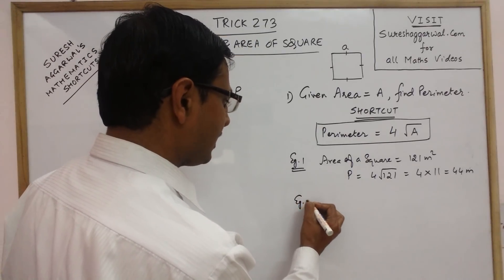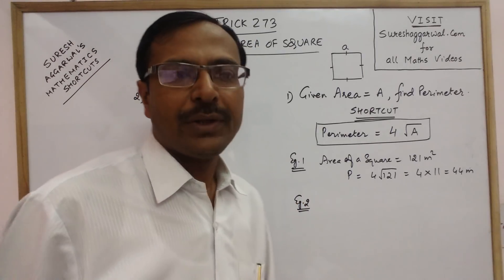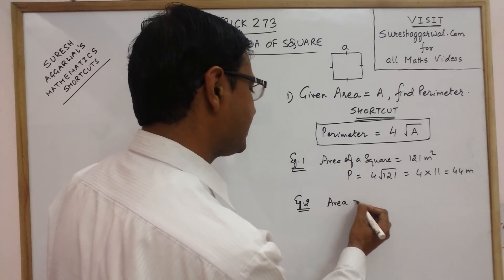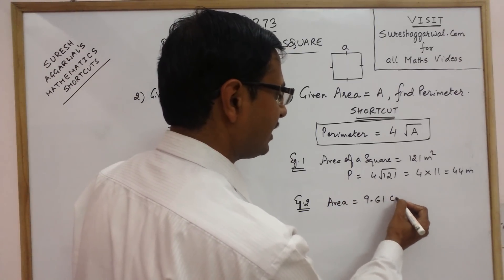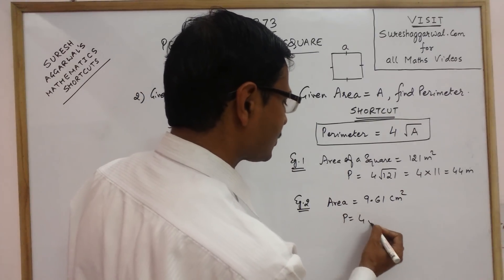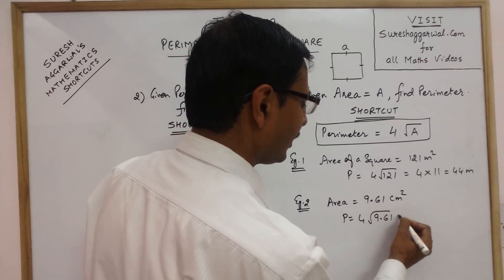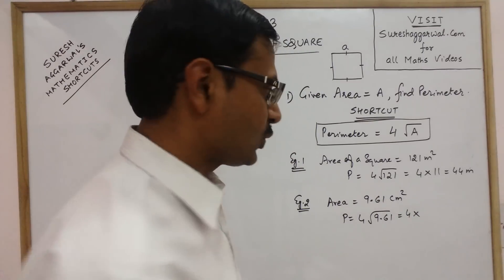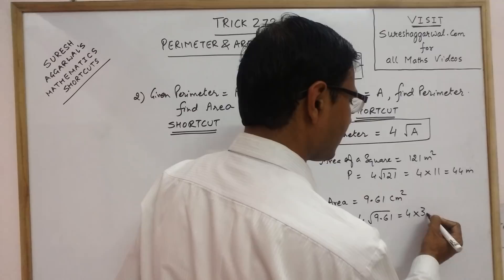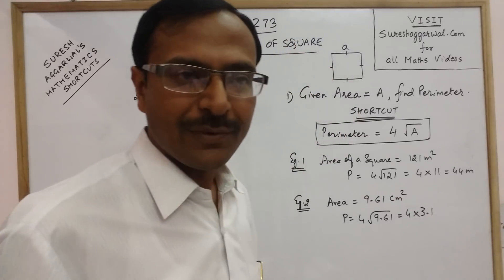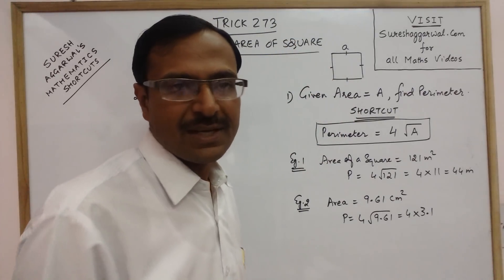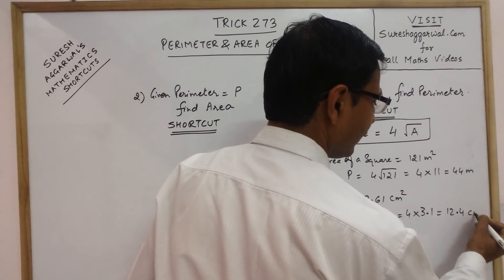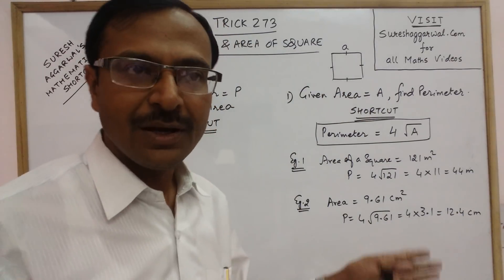One more example, say example number 2. The area is given in decimals, say it is 9.61 centimeter square. The perimeter is 4 times the square root of 9.61. If you know 961 is the square of 31, so 9.61 is the square of 3.1. Now the calculation is very easy. Just multiply: 4 times 3 is 12 and 4 times 1 is 4. So 12.4 centimeter is the perimeter.